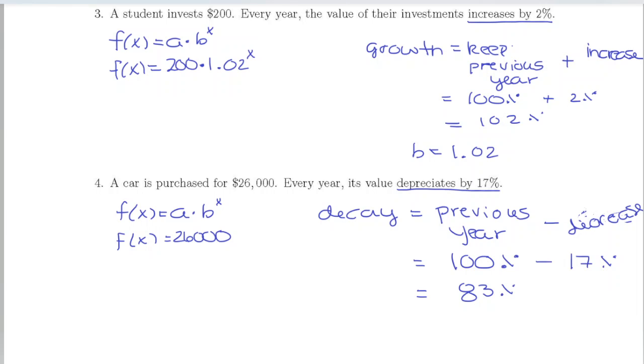Another way to think about that is to say if you're losing 17% of its value, you are retaining or keeping 83% of its value. That's what the decay rate and the growth rate are all about - what amount are you keeping. It may seem like you want to put 17%, but you want to focus on the value that you are retaining, or the 83%.